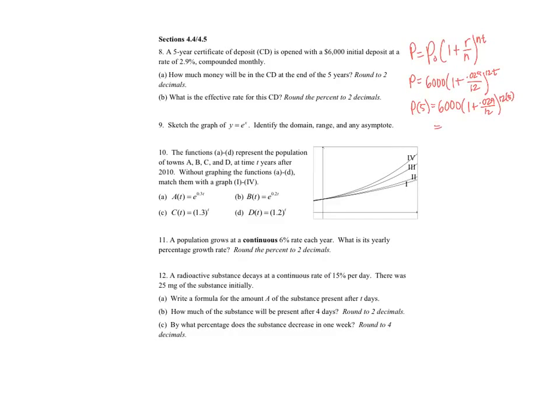And so if I compute that, one thing you'll need to remember when you're plugging this into your calculator is to put parentheses around the 12 times 5. So if you compute that you'll get $66,935.02.